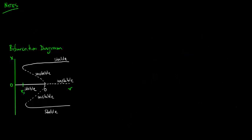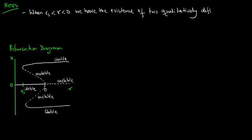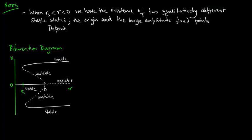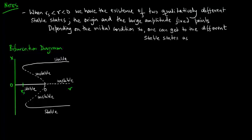Here are notes about the bifurcation diagram. When rs is less than r is less than zero, we have the existence of two qualitatively different stable states. The origin and the large amplitude fixed points. One can get to the different stable states as t tends to infinity. So if we start the system at x star equals zero and slowly increase the parameter r, it remains stable at the origin till r equals zero, and then will actually jump to one of the large amplitude branches.